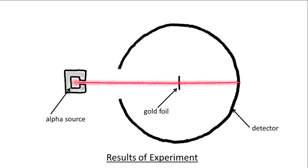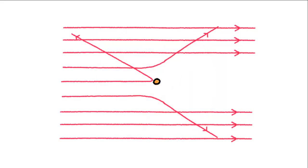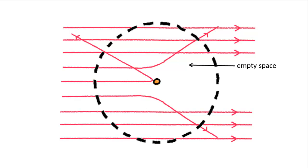Surely the plum pudding model is wrong. The positive charges and mass in the atom cannot be distributed evenly. Instead, they must be concentrated in a very small volume at the centre of the atom. The rest of the atom is mainly empty space. This central charged region is now called the nucleus of the atom.